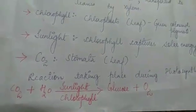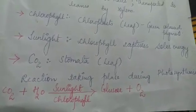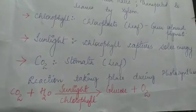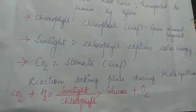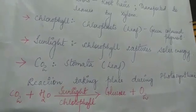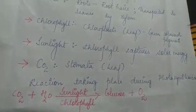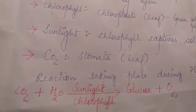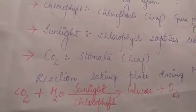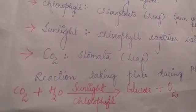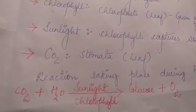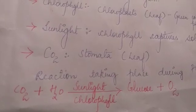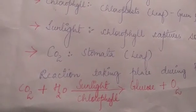So the reaction taking place during photosynthesis: carbon dioxide and water are converted to glucose and oxygen in the presence of sunlight and chlorophyll. Next, you have to write in detail the two modes of nutrition with examples and the process of photosynthesis.